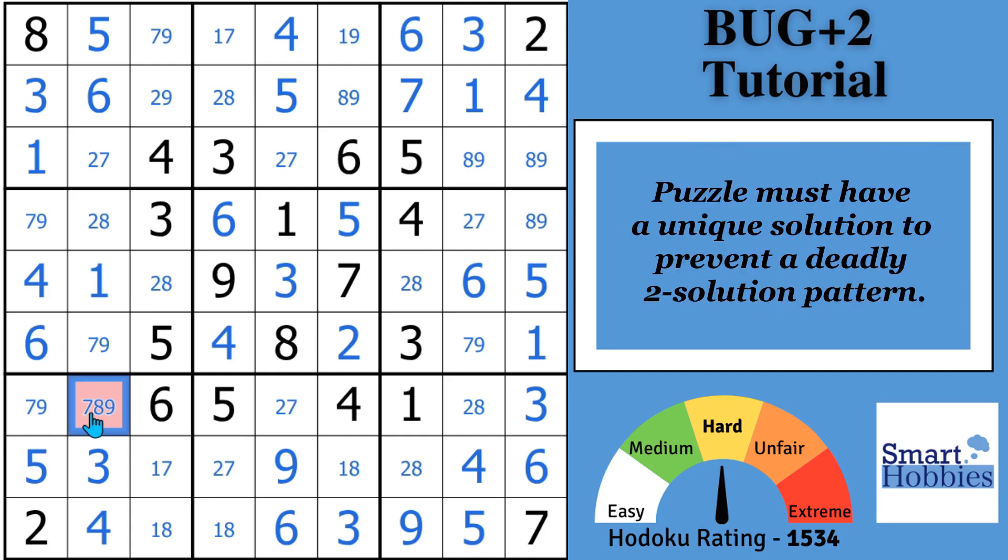Because what you're trying to avoid is a deadly pattern. So if this was not a seven and you had all bi-value cells, you could plug in one of these digits, the eight, solve every single cell in the puzzle, and then come back and put a nine in there and every single cell would solve again for the other possibility in those cells.